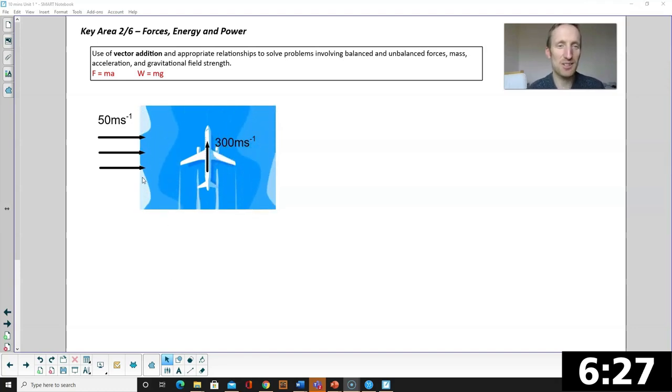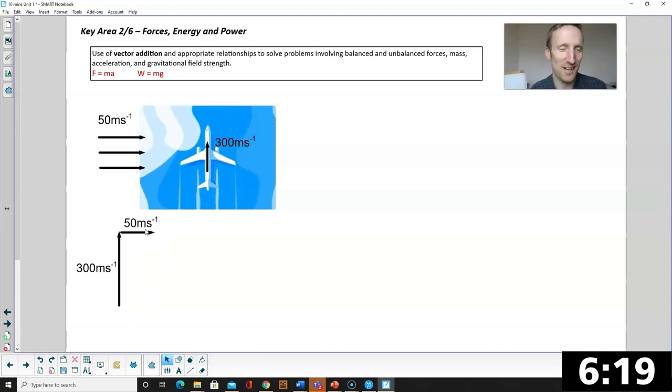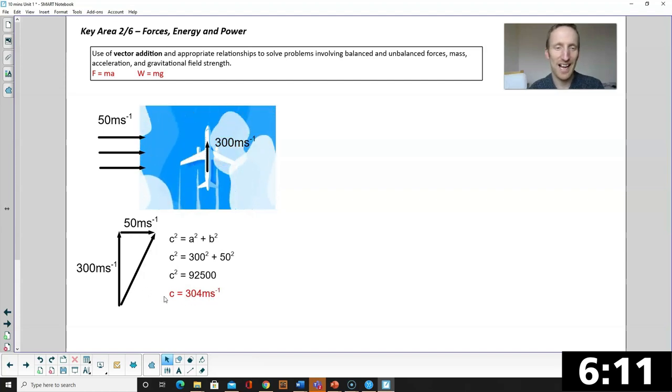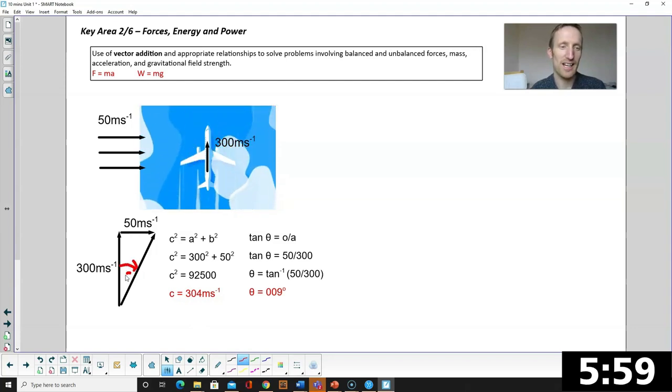Okay vector addition. If you have two vectors at right angles you can add them together by drawing yourself a little triangle. You have to draw the vectors one after the other. We call it nose to tail. You then join up the triangle and you can use Pythagoras to work out the length of the side. That gives you your overall magnitude of your vector and you use trigonometry to find the angle. Remember if you're finding an angle you always measure your angles clockwise from north in here.